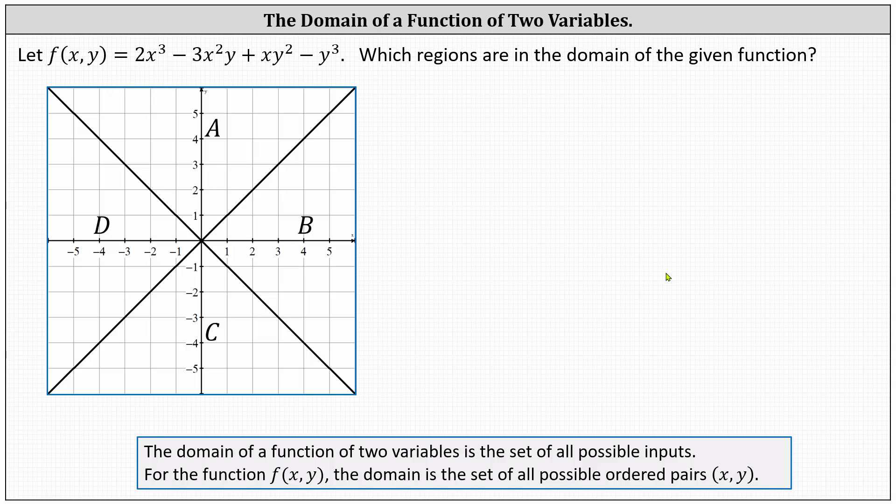Given f of x comma y, which regions are in the domain of the given function? Recall for a function f of x comma y, the domain is a set of all possible ordered pairs x comma y.